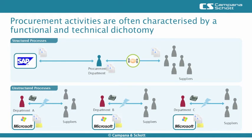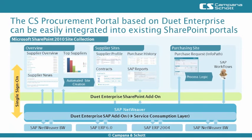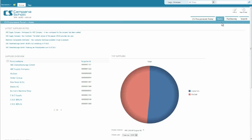Employees of the operating departments frequently encounter problems when they try to access information from SAP. The consequences are inefficiencies and a lack of transparency. The solution we are going to present is based on Microsoft SharePoint technology and Duet Enterprise, a joint product of SAP and Microsoft. Duet Enterprise is used to connect the SAP world with the Microsoft world. The actual application provisioning takes place in Microsoft SharePoint. Let's have a look at the solution.